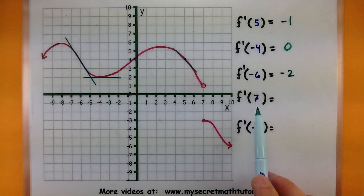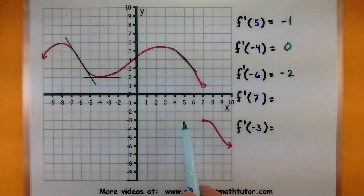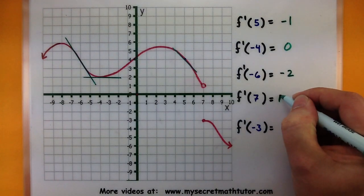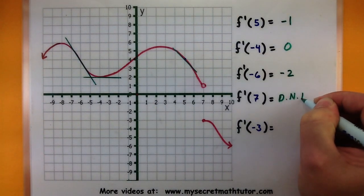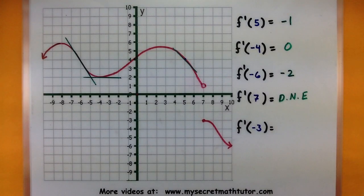All right let's see what is the derivative at 7. Oh we got a huge gap at 7. So here's one of those places where we can say the derivative does not exist. All right and one more.